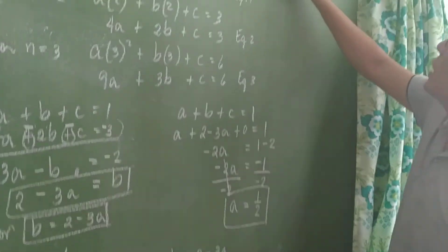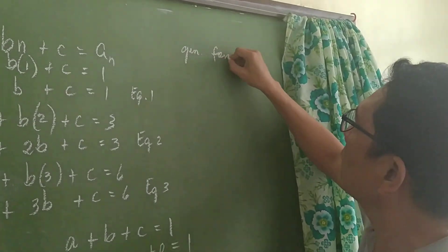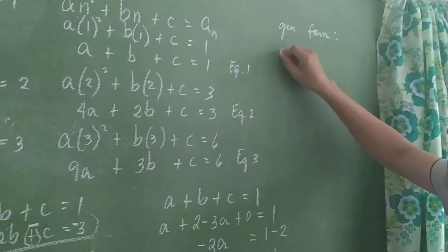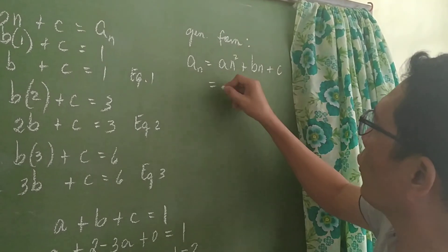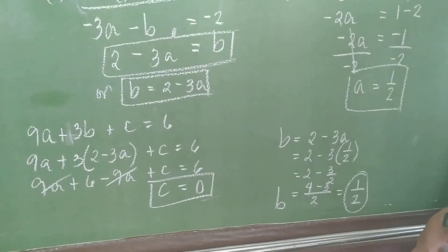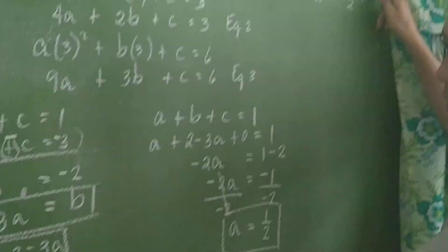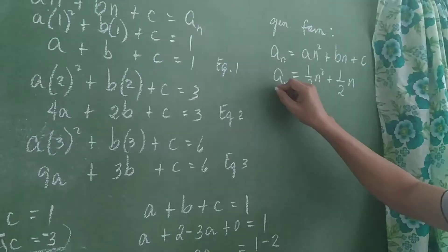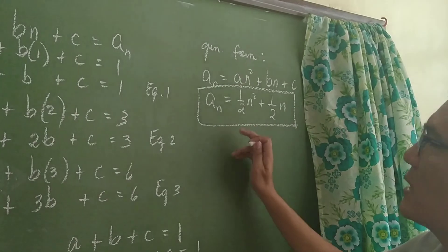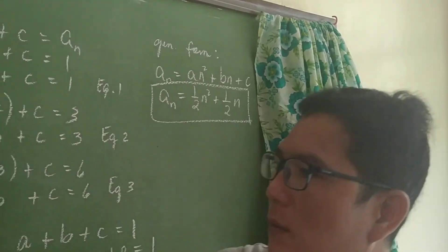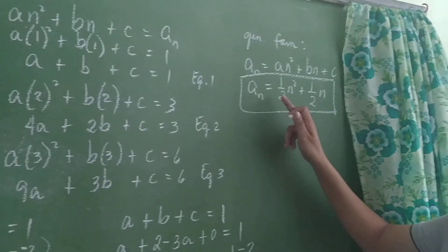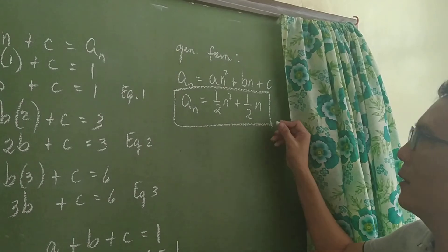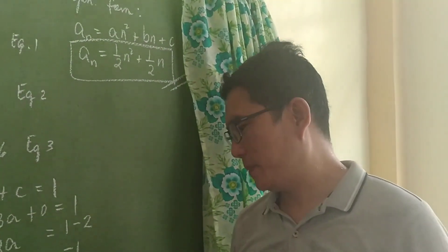Therefore, the general term of the sequence 1, 3, 6, 10, 15 is: a sub n = (1/2)n² + (1/2)n, since a = 1/2, b = 1/2, and c = 0. That's all — thank you.